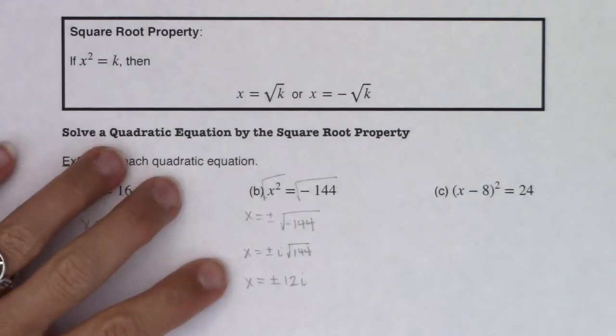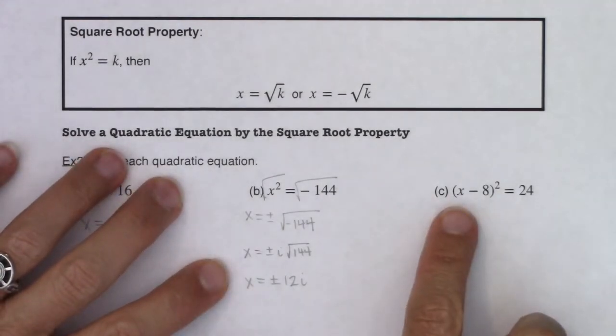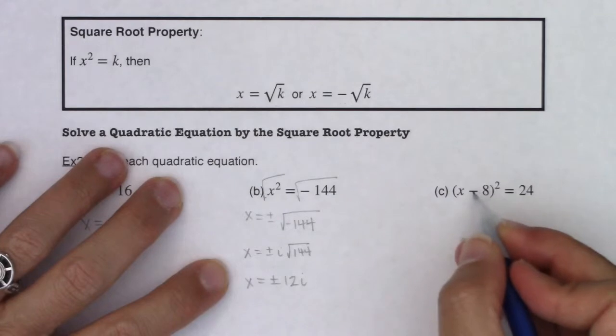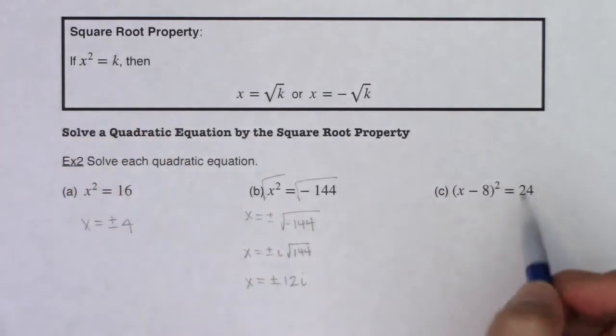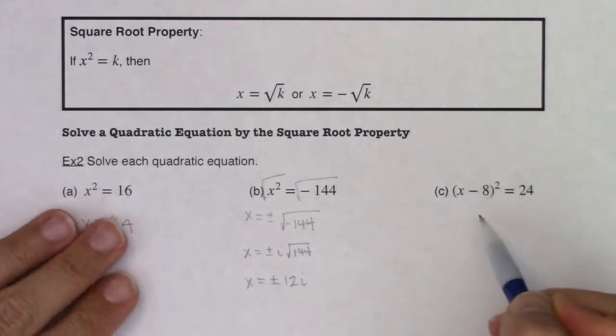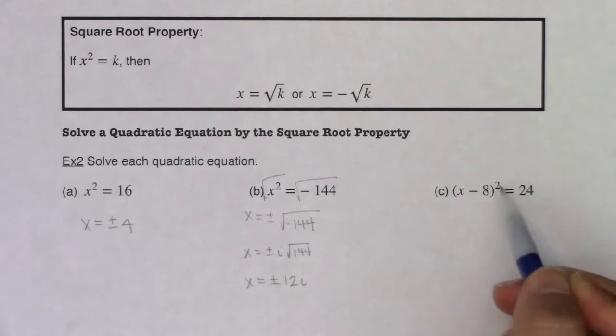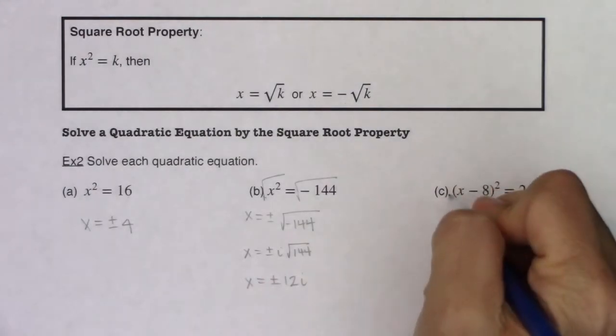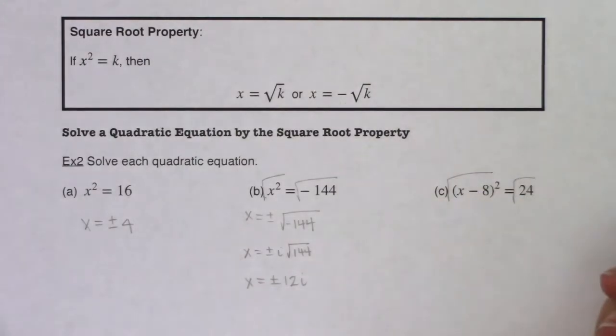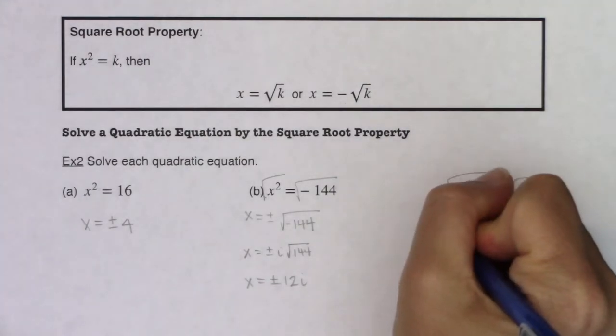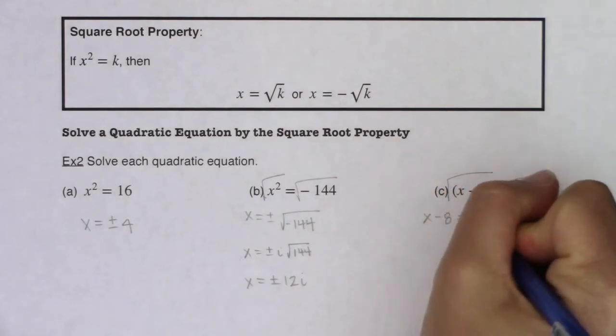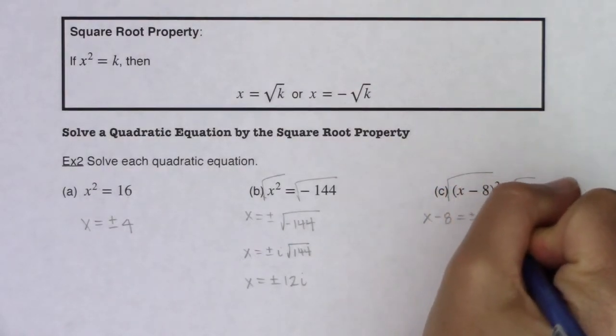Now over here for example c, I have this nice binomial that's squared. And while we haven't gotten to completing the square yet, we're about to, just trust me that this could have been a problem where you were initially completing the square and you got it down to this form. So you have this binomial squared equaling a number. And then the same shenanigans can happen. We can square root both sides and I will get x minus 8 is equal to the positive or negative square root of 24.